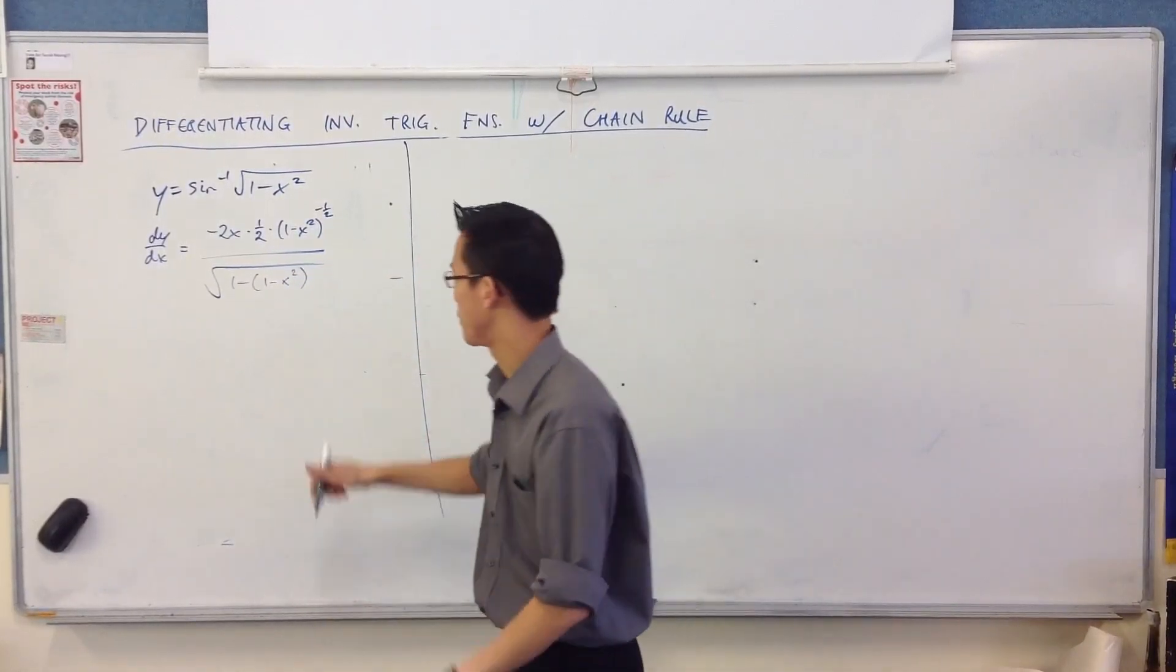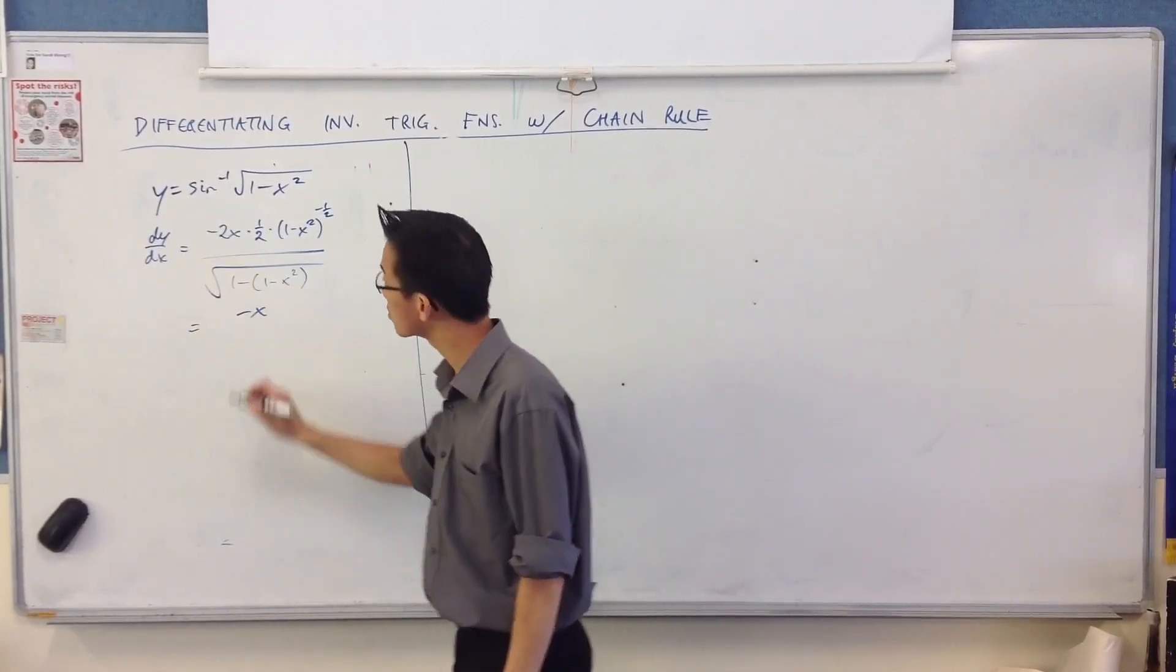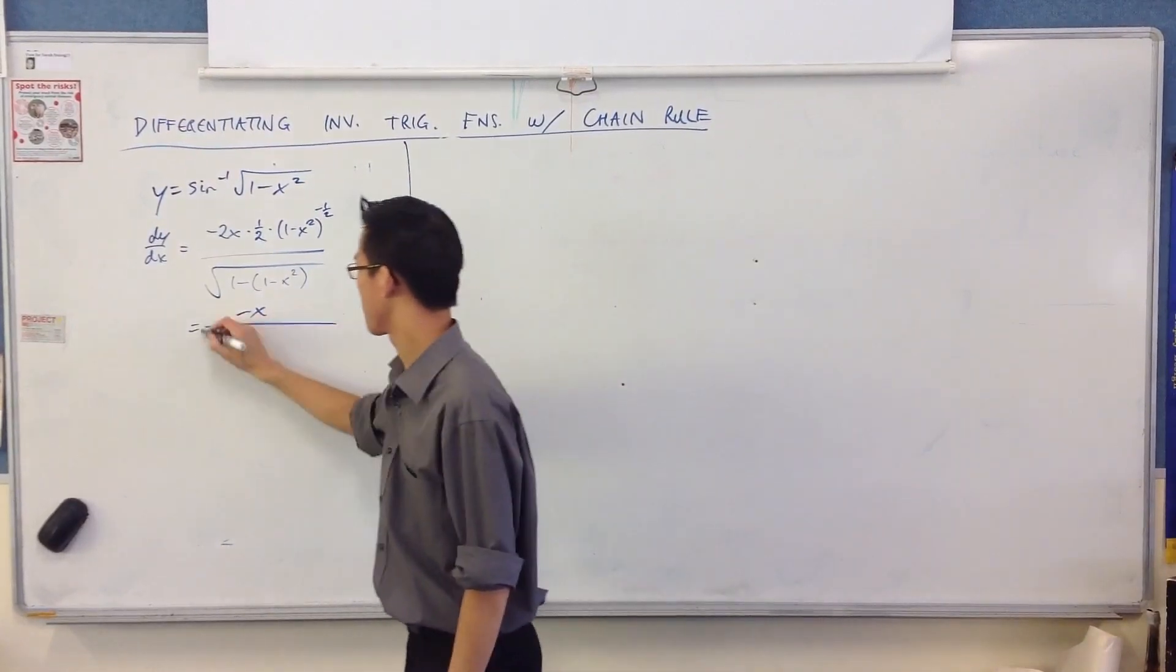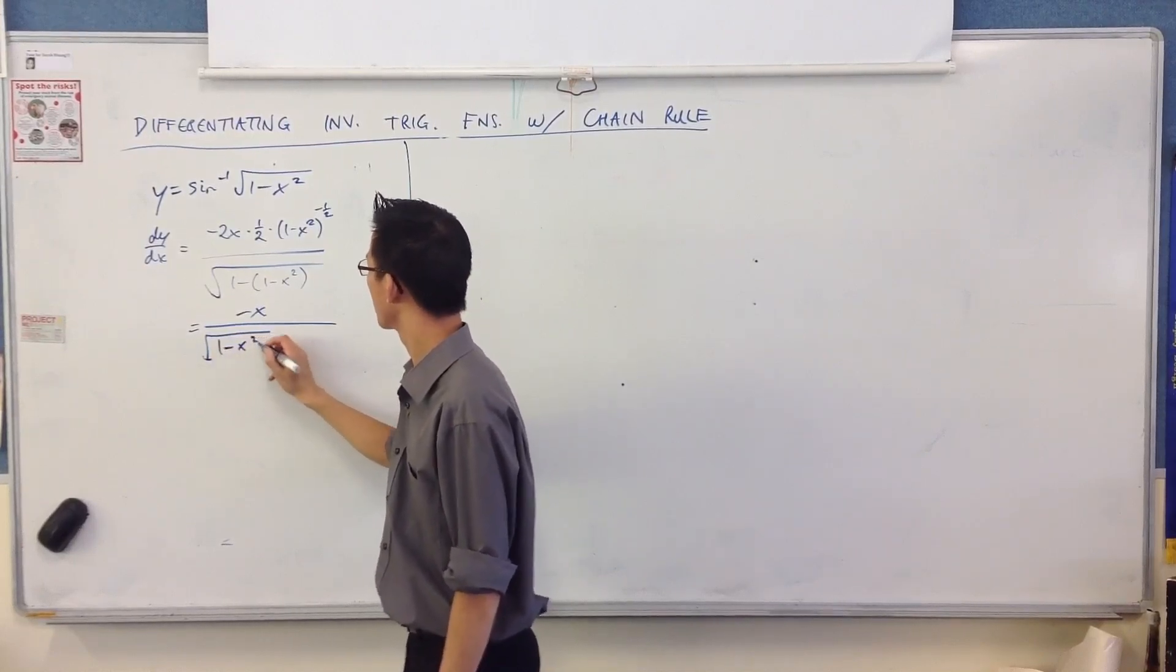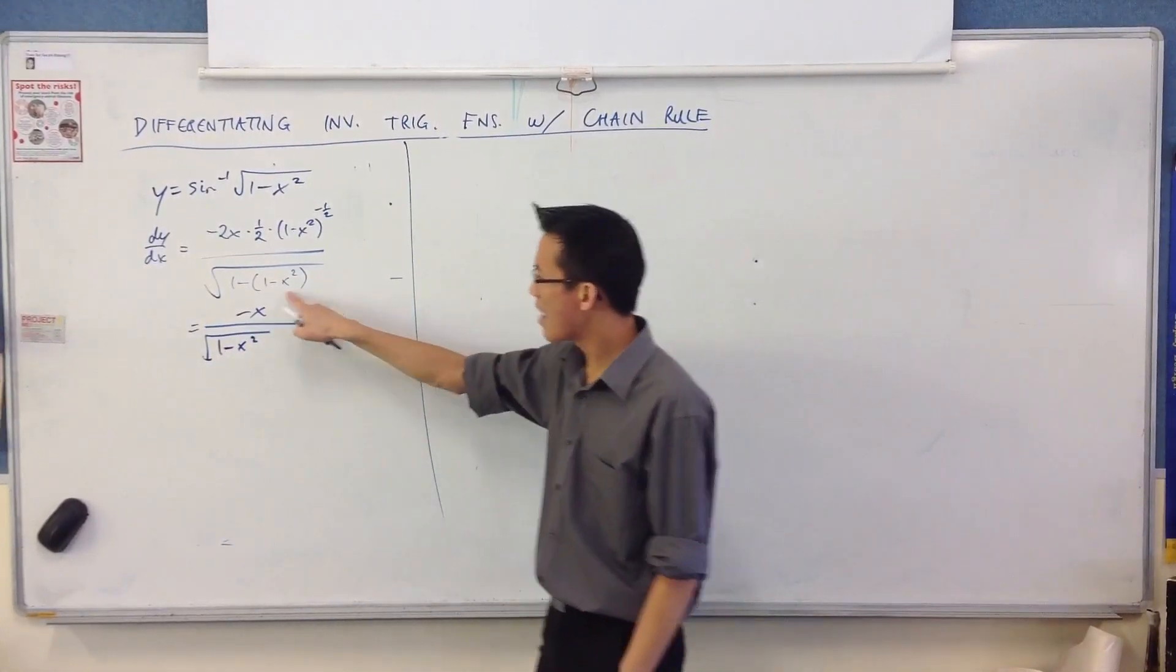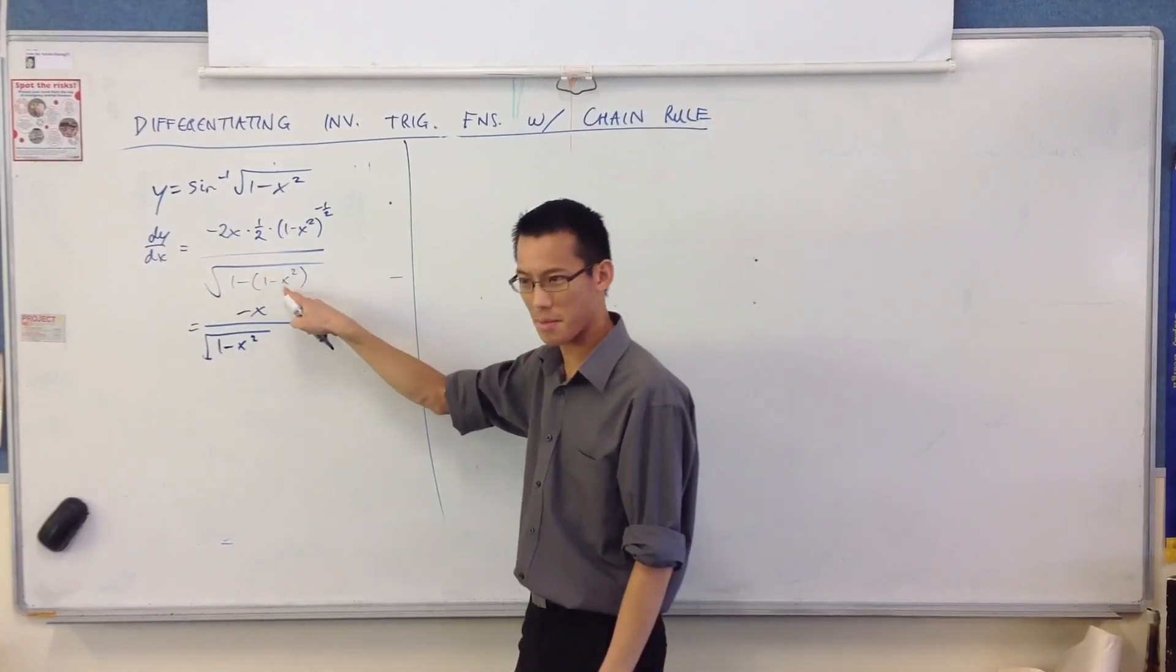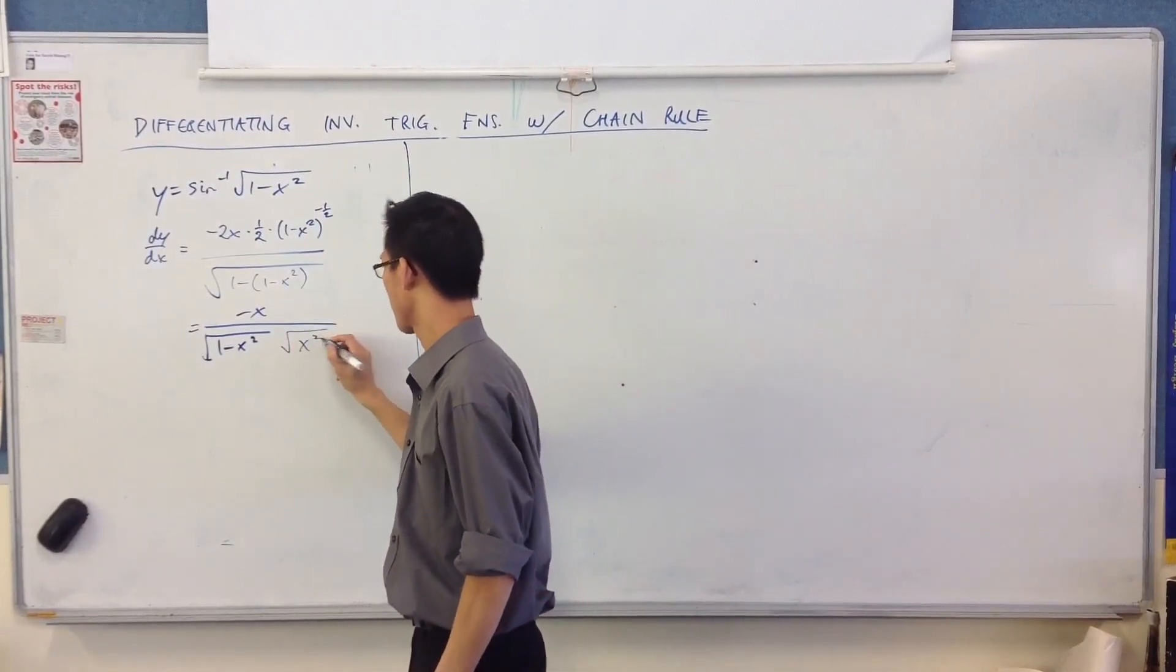Let's tie this up in a bit. It's a bit of a disaster at the moment. The 2 and the half, they cancel, so I'm going to get minus x on the top. This is going to come down the bottom. Does that look right? Yeah. And now I have this, so 1 minus 1, 0, minus minus x squared, positive x squared.